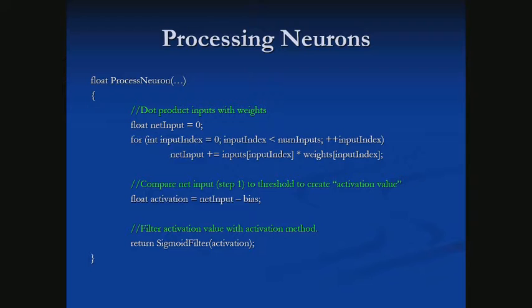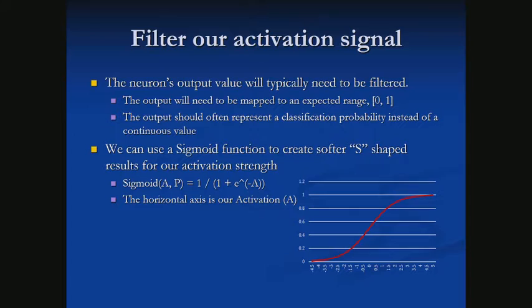Now we need our third step, where we filter this activation value to make it zero to one. There are a lot of different activation or filter functions we could use. One of the most common is the sigmoid function, so we'll use that one to start. We want to map our output to a zero-to-one range.